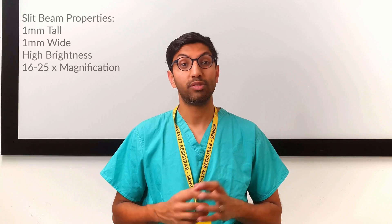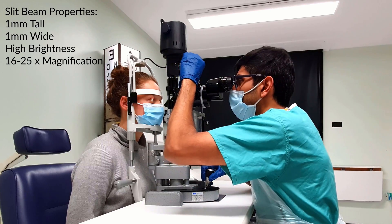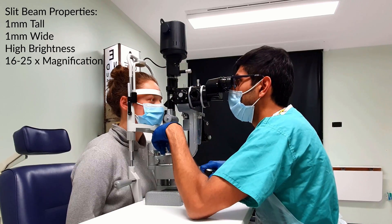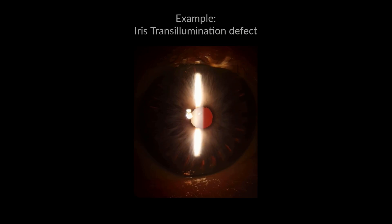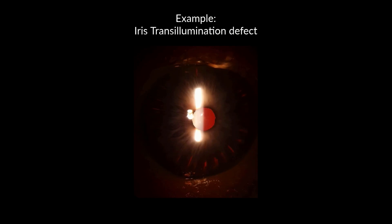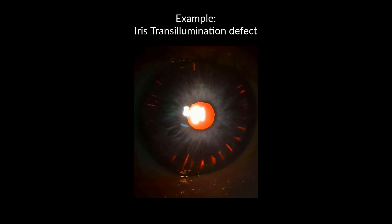To use the retina to retroilluminate, use a bright beam and direct the light source on the posterior surface of the retina. Using the red reflex, you can assess the lens and observe any iris transillumination defects. You should reduce the height of the slit beam for this.